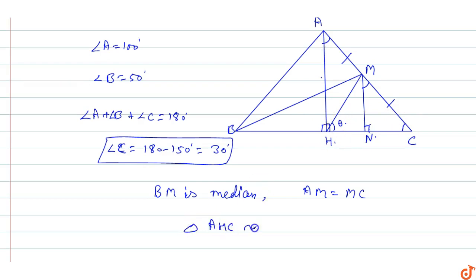Triangle AHC is similar to triangle MNC. Since AM equals MC (from the median), and the triangles share angle C, and both have a right angle, triangle AHC is similar to triangle MNC.